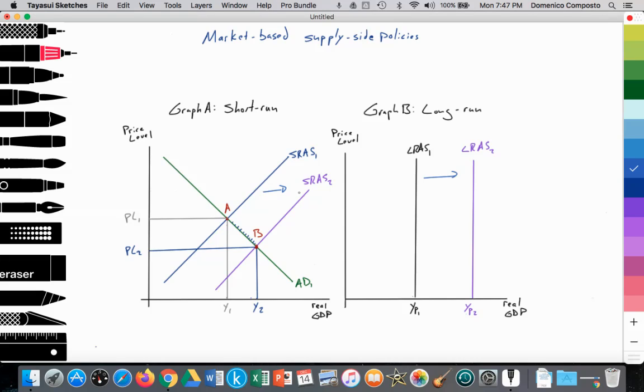Now, these cost-effective measures being implemented in the short run will also translate in the long run. The economy is more productively efficient, producing more output with less units of resources. So LRAS shifts out from LRAS1 to LRAS2. Potential GDP increases from YP1 to YP2. And that's it. That's how we would graph and analyze a market-based supply-side policy.